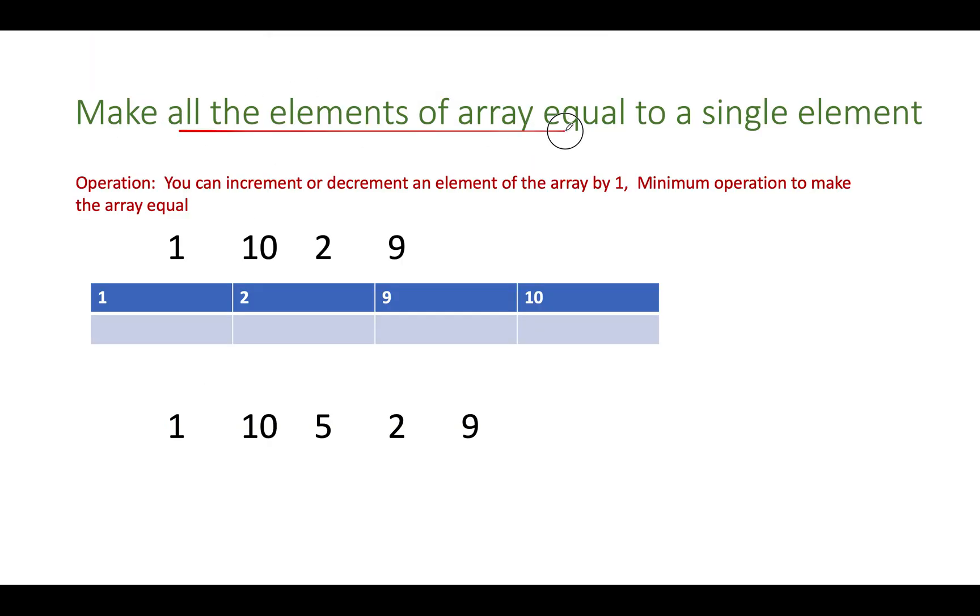Make all the elements of an array equal to a single element. In one operation you can increment or decrement an array element by one. We need to identify the minimum number of such operations required to make all the array elements equal. So the only caveat here is identifying what should be that element to which all the array elements should be made equal to.